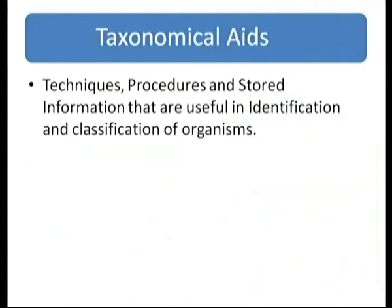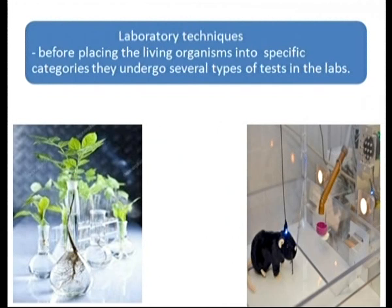Taxonomical aids are techniques, procedures, and stored information useful in the identification and classification of organisms. Laboratory techniques are one such taxonomical aid — before placing a newly discovered living organism into a specific category, it undergoes several types of tests in the laboratory.